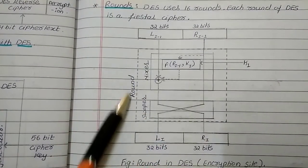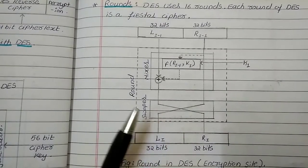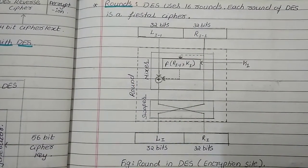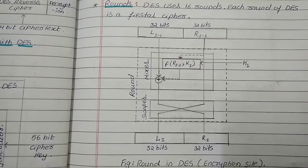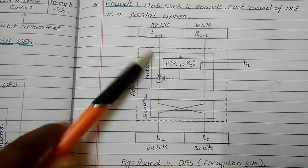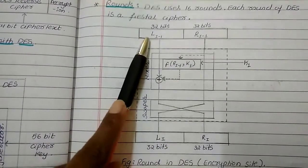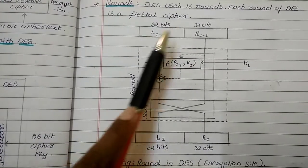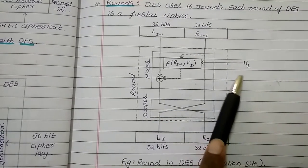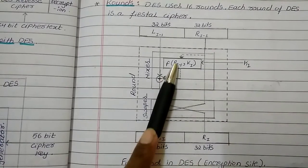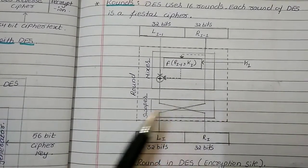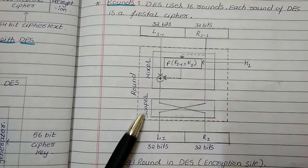This is the diagram of what exactly is happening in each and every round of DES. Actually, the DES is using 16 rounds. And each round of DES is a Feistel cipher. Here, we are having 64-bit data divided into 2 halves each of 32-bits. First 32-bits is called as Li-1 and next 32-bit is called as Ri-1. And we are applying some key Ki to the function F of Ri-1, Ki. As we can see, the round is having two functions with it. First one is mixer. Second one is swapper.